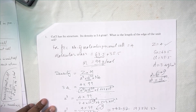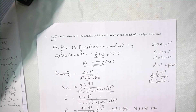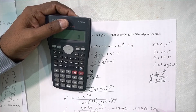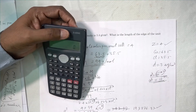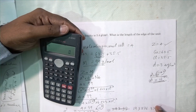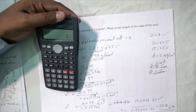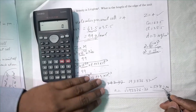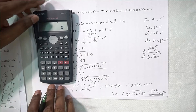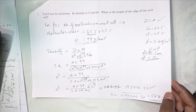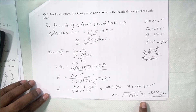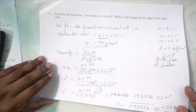Substituting in the calculator, you get A cubed equal to 193,376.37. Taking the cube root of this value gives 578.21 picometers. So the edge length of the cell is 578.2 picometers by calculation.